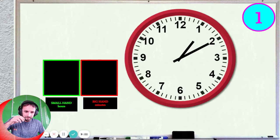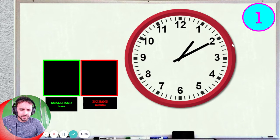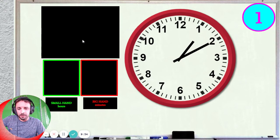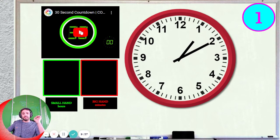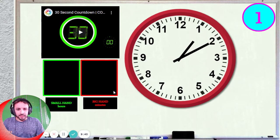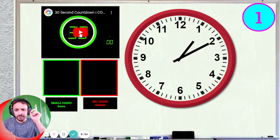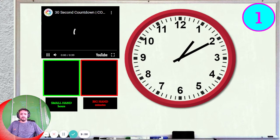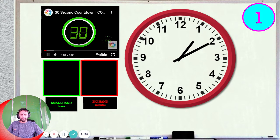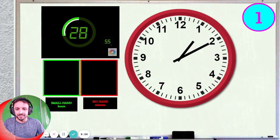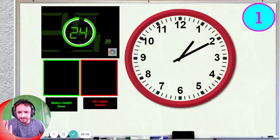Okay, are you ready? Number 1. What is the time? I'm going to give you 30 seconds to write down your answer. So I hope you're ready — I'm not going to give you any help, really. The small hand is pointing here, the big hand is pointing here. What is the time? Tell me the hour and tell me the minute. 30 seconds — I'm sure that is plenty of time.